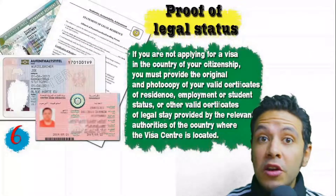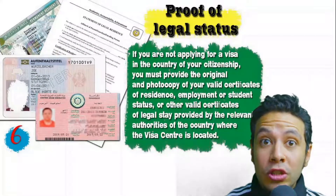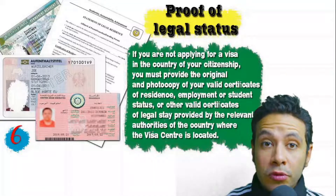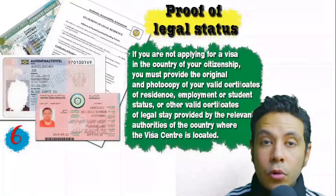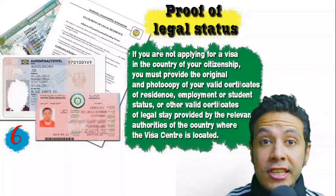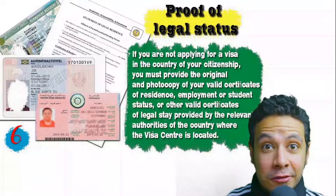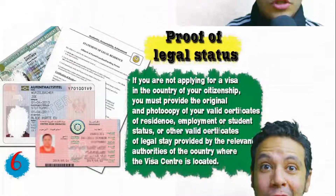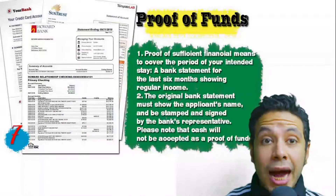In some cases you might be applying from a country different than your own. At that point you will need to provide a proof of legal status, which is a certificate of legal residence in that country. In some cases a valid residence visa for that country can also be accepted.